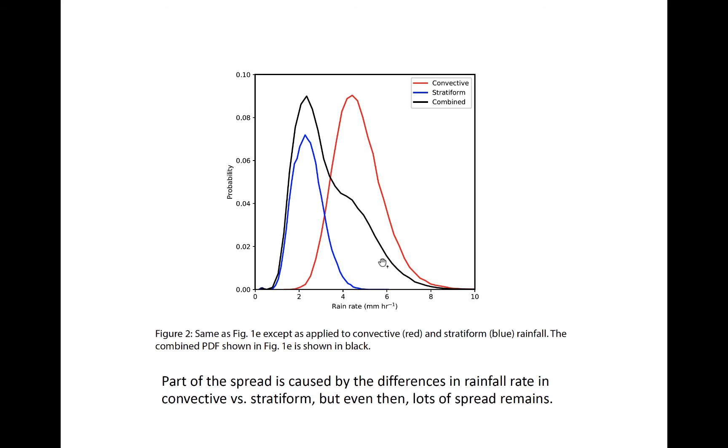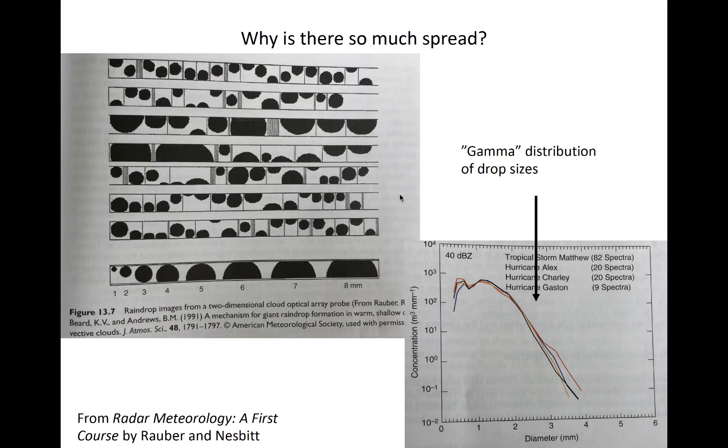There are a few reasons that such spread exists in the rainfall PDFs. Part of the reason has to do with variability in drop size distributions.